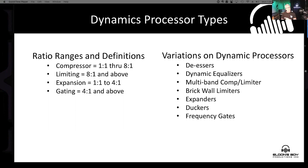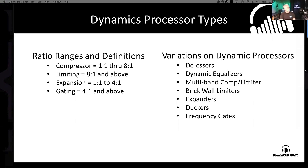There are all kinds of variations on dynamics processors — we won't be going through all of them today. But especially in the world of digital consoles, we have a ton of dynamics processor types available to us now. Things like de-essers — which is actually a frequency-dependent compressor — dynamic equalizers, multiband comp and limiter, brick wall limiters for mastering and getting things to the web, expanders, duckers, and even frequency gates.